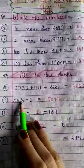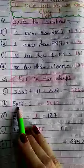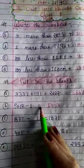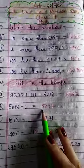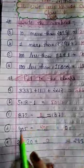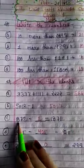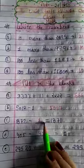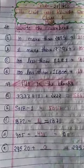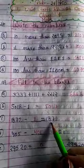ठीक है। इस तरह अब B देखेंगे हम। 5,018 minus 1, तो कितना आ जाएगा हमारा answer? 5,017. ठीक है। C देखेंगे। 1,872 minus dash equal to 1,871.